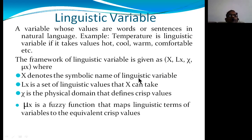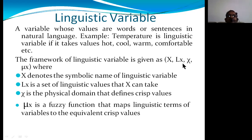We also discussed Gaussian fuzzy functions. The next concept is linguistic variables — variables whose values are words or sentences in a natural language. For example, temperature is a linguistic variable if it takes values like hot, cool, warm, or comfortable. The framework of a linguistic variable is represented as (X, L_X, x̃, mu_X), where X is the symbolic name, L_X is the set of linguistic values X can take, the physical domain defines crisp values, and mu_X is the fuzzy membership function that maps linguistic terms to equivalent crisp values.